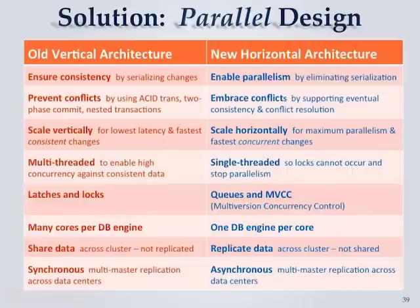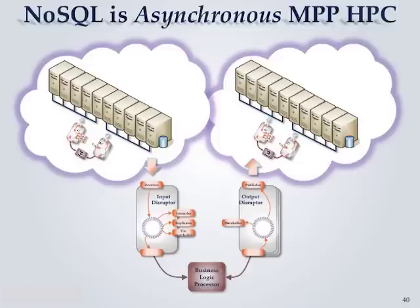That's where NoSQL comes in — they say we're not going to have any locks at all. That's one of the secret ingredients of VoltDB: they force you to use stored procedures for everything, which by design prevents you from using latches, so they're fast. So here's the two paradigms: the old vertical and the new horizontal. The new paradigm for NoSQL hardware is asynchronous, massively parallel, high-performance computing.